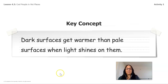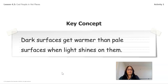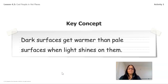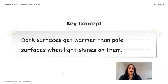Our key concept is: dark surfaces get warmer than pale surfaces when light shines on them. We also talked about how when it's hot, we try to wear clothing that is lighter, and when it's cooler, we wear clothing that is darker. We're going to talk about both the word dark and the word pale. Let me read the key concept one more time: dark surfaces get warmer than pale surfaces when light shines on them.